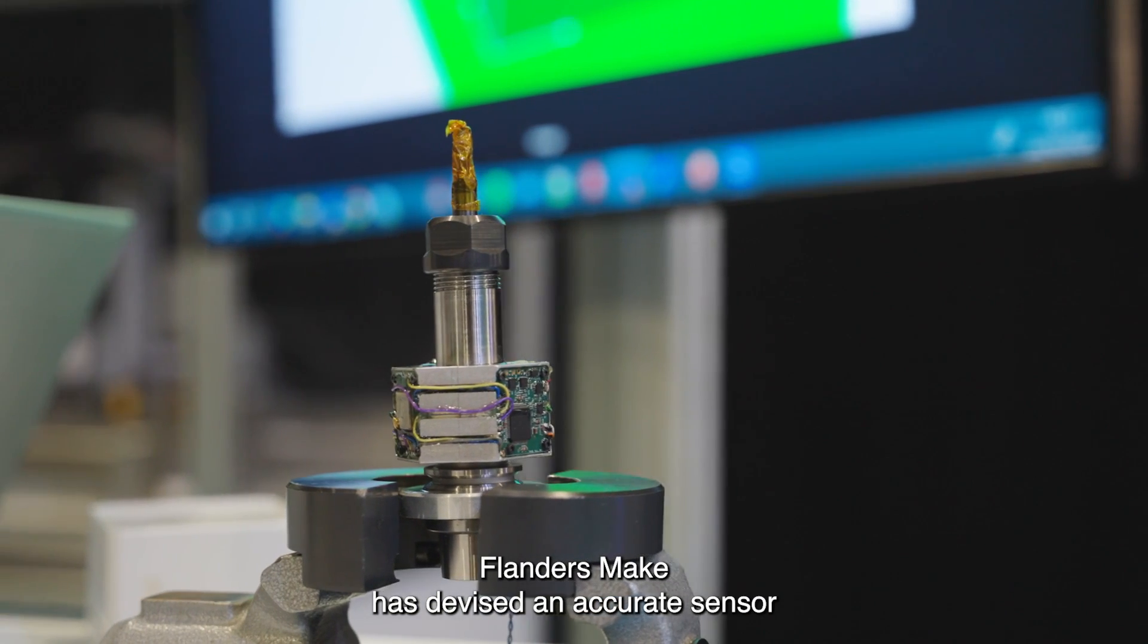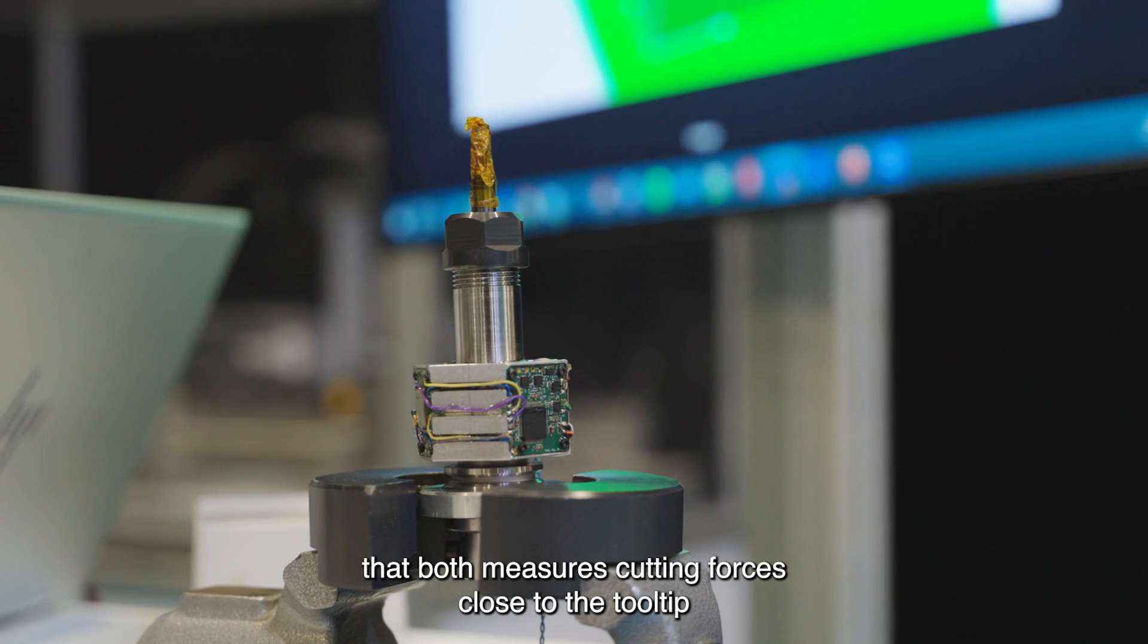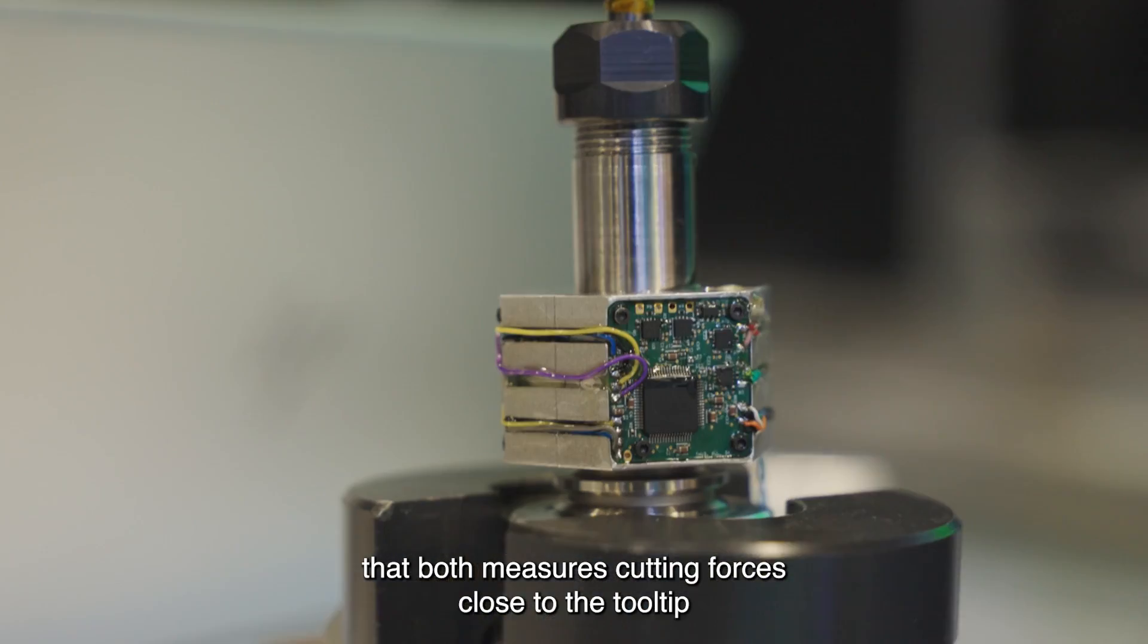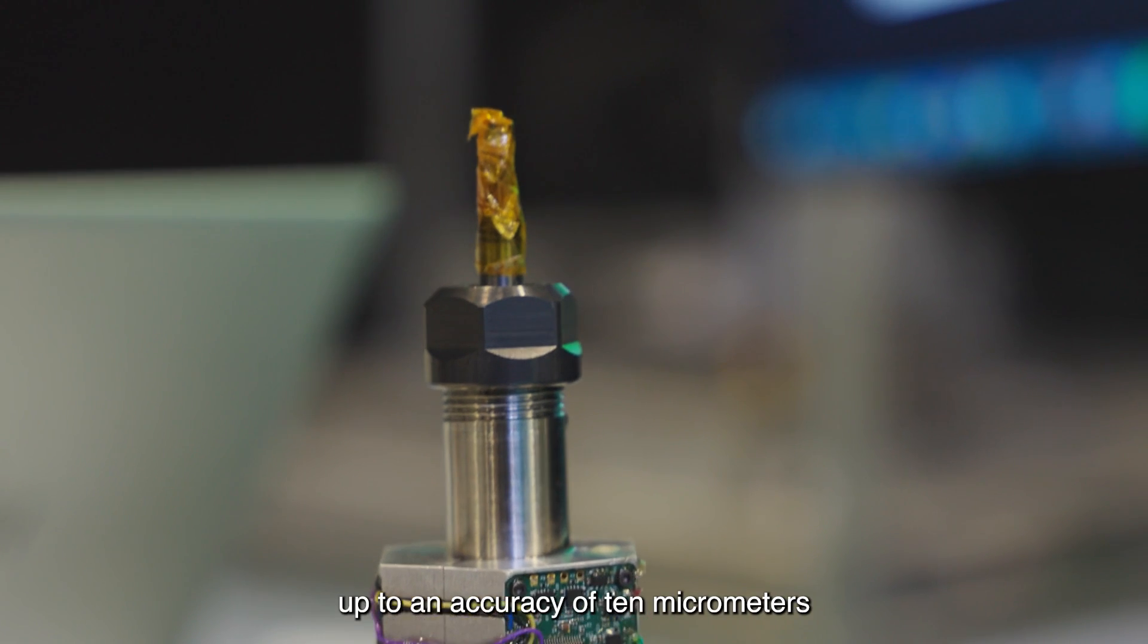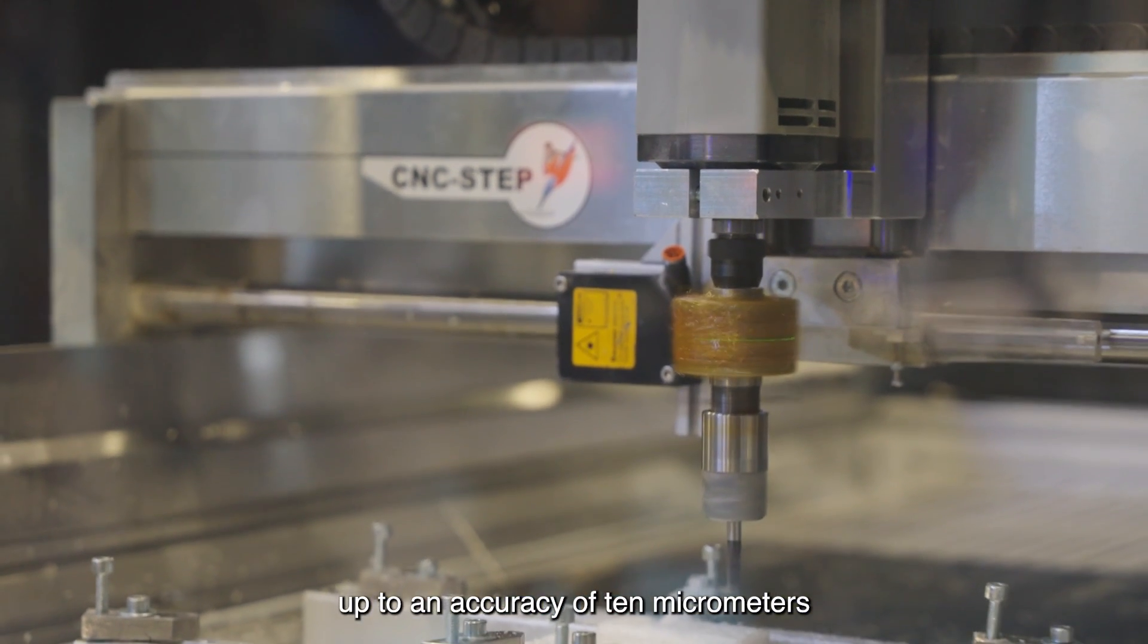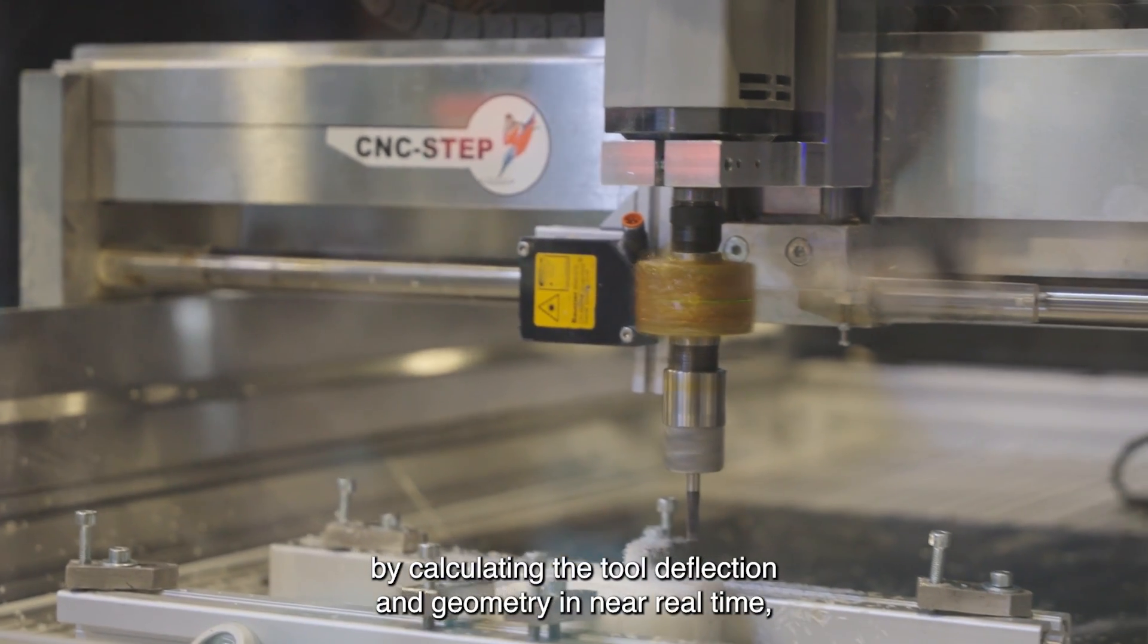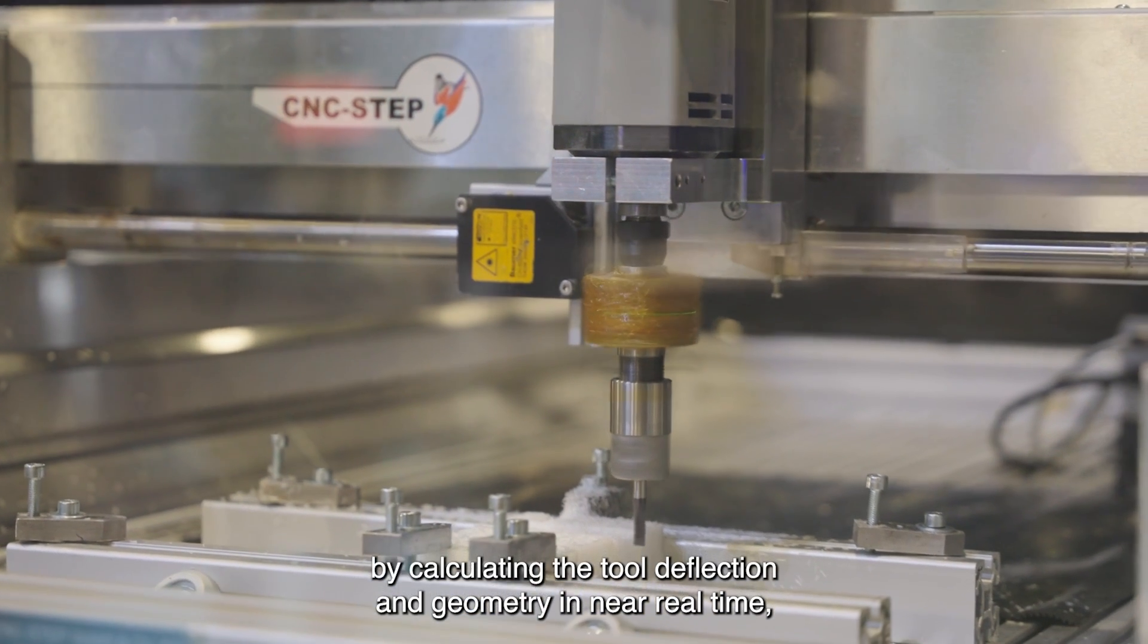Flanders Make has devised an accurate sensor that both measures cutting forces close to the tooltip and estimates the resulting geometry of the workpiece up to an accuracy of 10 micrometers. By calculating the tool deflection and geometry in near real-time,